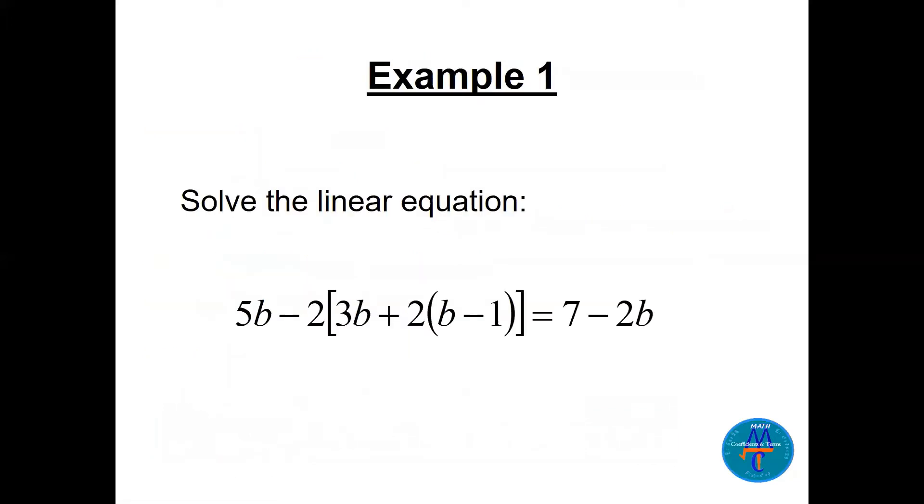Now let's solve the linear equation. One good idea here is you can do it yourself in a minute and check. We have 5b minus 2 big bracket 3b plus 2 small bracket equals 7 minus 2b. So the answer is a number, we have to find the value of b. So we start with the inside bracket here, 2 times b, 2b minus 2. And then we add here, we continue like that, it's not difficult.